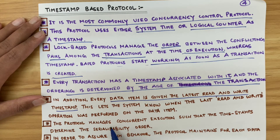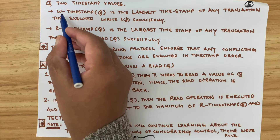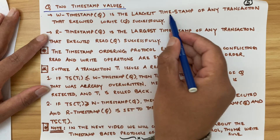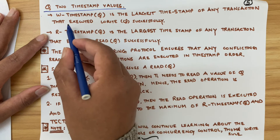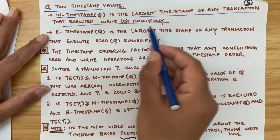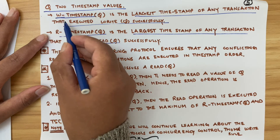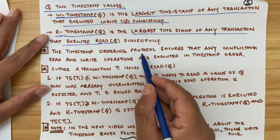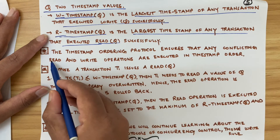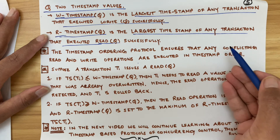The latest read and write timestamp lets the system know when the last read and write operation was performed on the data item. The protocol manages concurrent (simultaneous) execution such that the timestamp determines the serializability order. To assure this, the protocol maintains for each data item two timestamp values: W-timestamp(Q) is the largest timestamp of any transaction that executed write successfully, and R-timestamp(Q) is the largest timestamp of any transaction that executed read successfully.